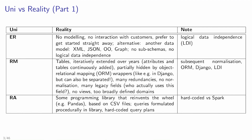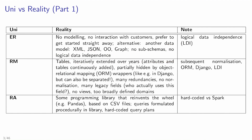In practice you also see other data models like XML, JSON, key-value style models, object-oriented models like we learned about in Django, graph models, and so forth. In particular, there's often no logical data independence — I'll explain what that is in a moment — and that's often neglected in those systems.